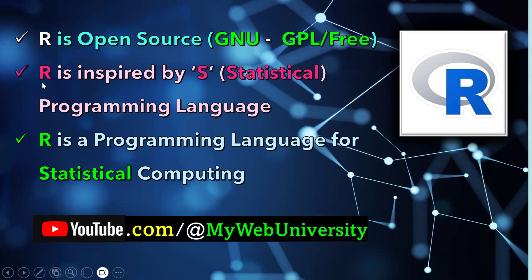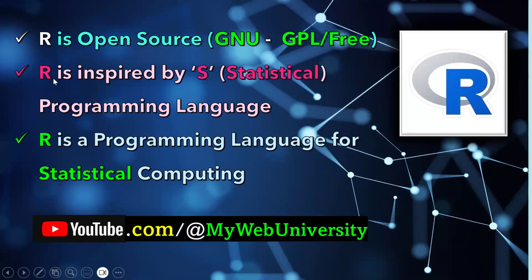R was inspired by the S programming language. S was originally developed in 1972 at the Bell Laboratory of AT&T as statistical software. R is the successor of that statistical programming language. R stands for R because of the two pioneers — Ross and Robert — whose first names both start with R, so they named it R.